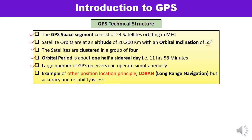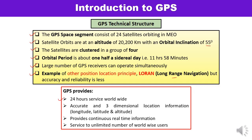There is another location principle called LORAN — long range navigation — which is also used for positioning, but the accuracy and reliability of LORAN is less in comparison to GPS. GPS provides 24-hour service worldwide. It is very accurate and provides three-dimensional location information — longitude, latitude, and altitude. It gives continuous real-time information, and an unlimited number of users can utilize the service, which is a major advantage of GPS.